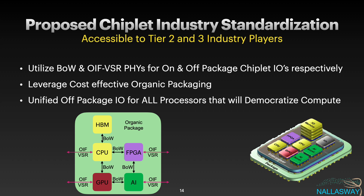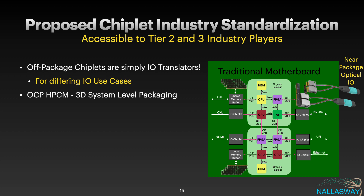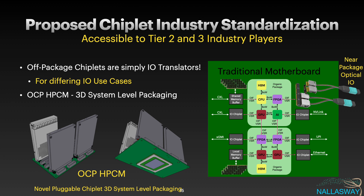This would be fully accessible to both tier 2 and tier 3 players rather than just the tier 1s. Looking at some implementation examples: the first picture shows a traditional motherboard where off-package chiplets are simply IO translators for differing IO use cases — from IO fabrics of different types, to memory attach, to near-packaged optical IO. We also have an opportunity to come up with novel pluggable system 3D architectures that can minimize power consumption at the system level — something we're doing in the OCP High Performance Compute Subproject.